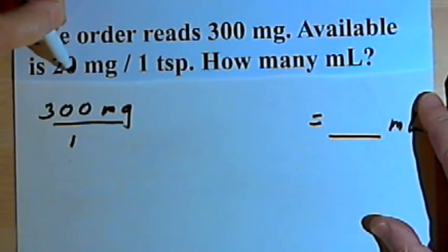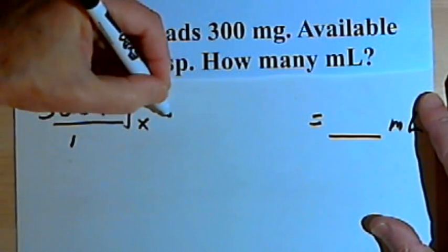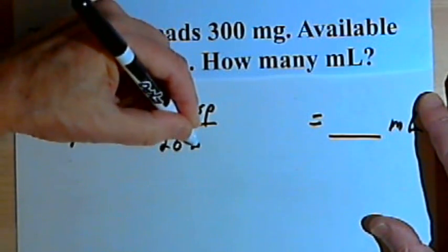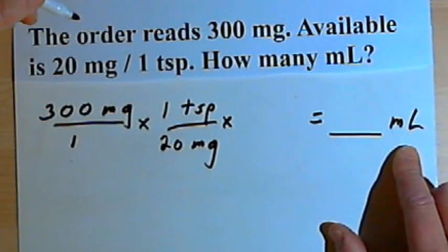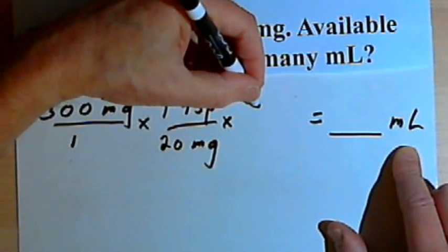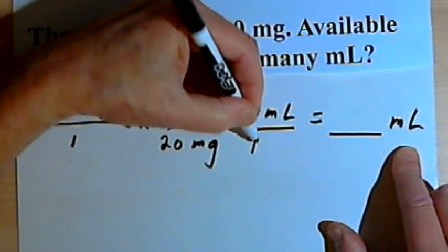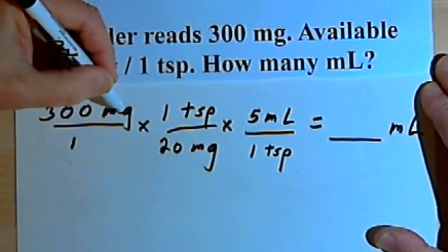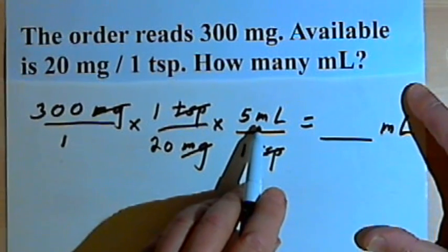I've got 20 milligrams per teaspoon, so let's multiply that first fraction by 1 teaspoon over 20 milligrams. Then we need to convert teaspoons into milliliters. The conversion is 1 teaspoon equals 5 milliliters, so we'll put 5 milliliters in the numerator and 1 teaspoon in the denominator. Then we cancel: milligrams cancel, teaspoons cancel, and we're left with just milliliters.